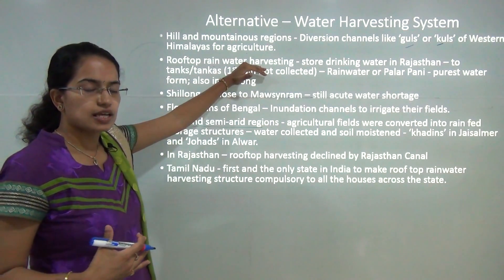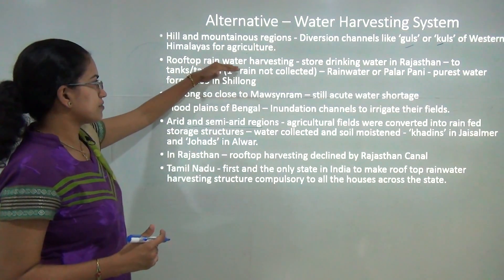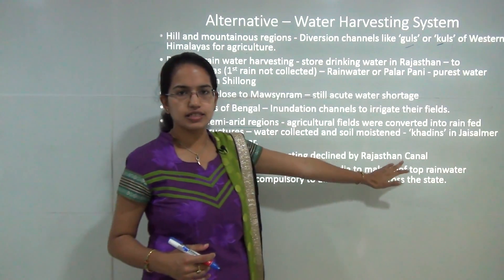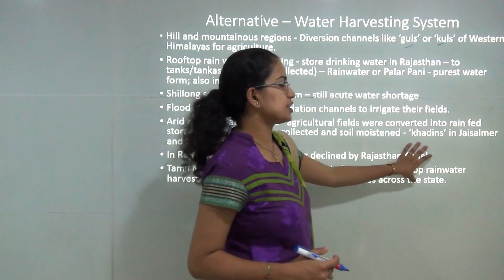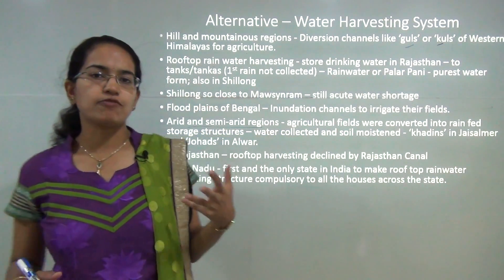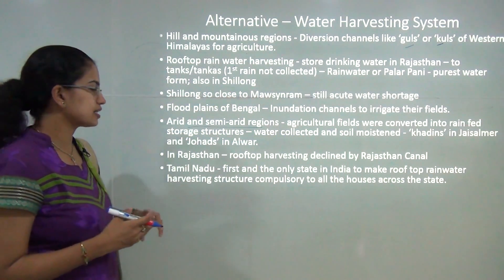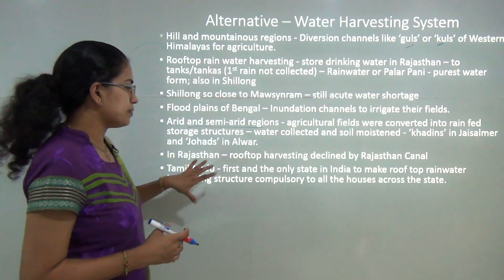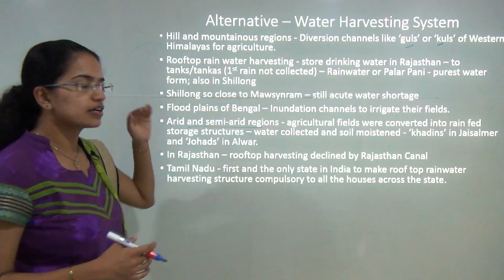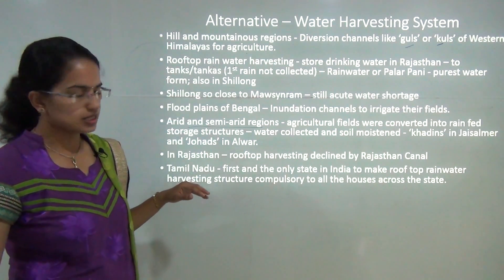In Rajasthan, with the construction of the Indira Gandhi Canal, there has been a diversion from rooftop harvesting to canal irrigation. This canal irrigation further led to consequences of salinization and waterlogging issues. Tamil Nadu is the first and only state in India to make the rooftop harvesting system compulsory for all houses in the state.